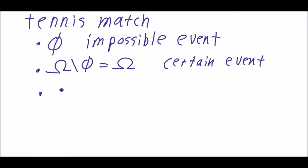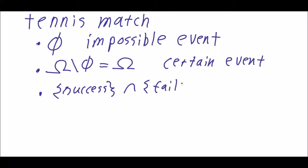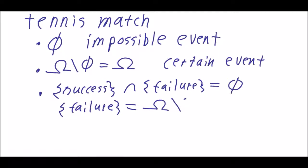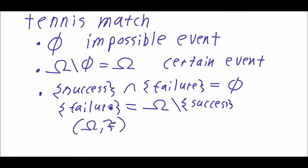The other events in the sigma algebra are success and failure. These are distinct events, and importantly, failure is the same as Omega minus success — it is the counter event of success. Now we can introduce a probability function for this measurable space in our tennis set example, but that will happen in the next part of the video.